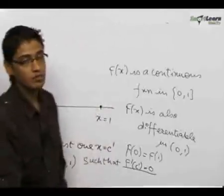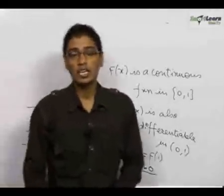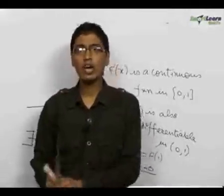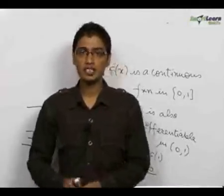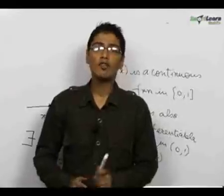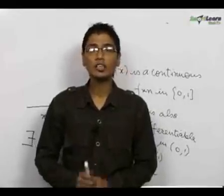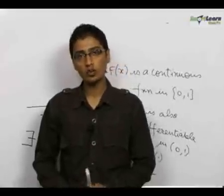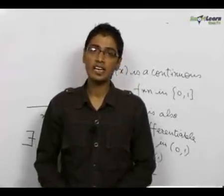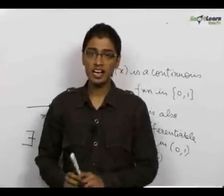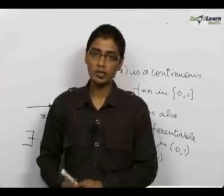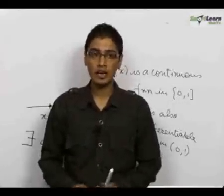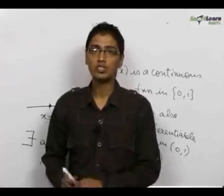I would explain the Rolle's concept once again. If there is a function f(x) such that f of a is equal to f of b, where a to b is the given domain, f of x is continuous in the closed interval a to b, f of x is differentiable in the open interval a to b, then there exists at least one x equals c dash in the given range of a to b such that the differentiation of the function f(x) at x equal to c is equal to 0.